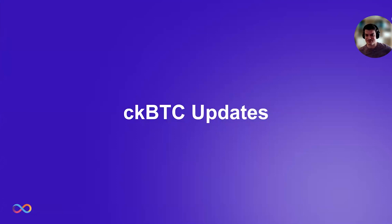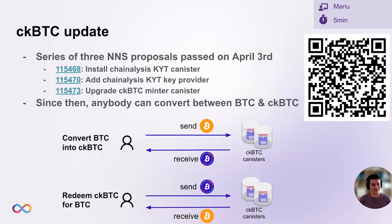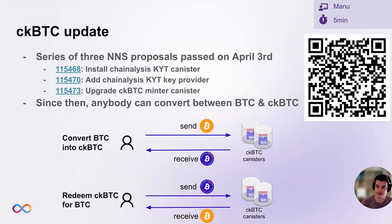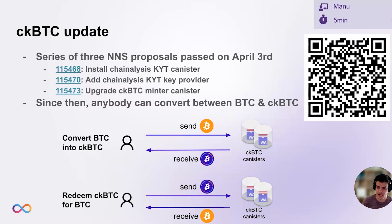Yeah, thank you. Hi, everybody. I'm Manu. I'm a director of engineering at DFINITY. Last month, I spoke about CKBTC and all the KYT challenges that we were, at the time, discussing with the community. As a result of that, DFINITY submitted three NNS proposals that were adopted on April 3rd, which installed the Chainalysis KYT canister and added a key provider and upgraded the CKBTC minter canister to make use of that. This fully enabled CKBTC, meaning that since those proposals passed, anybody can convert Bitcoin into CKBTC by sending native Bitcoin to a Bitcoin address controlled by the CKBTC canisters and getting CKBTC in return.